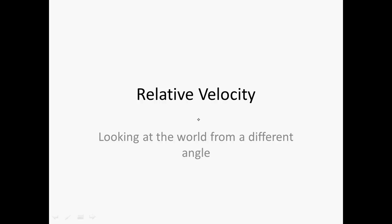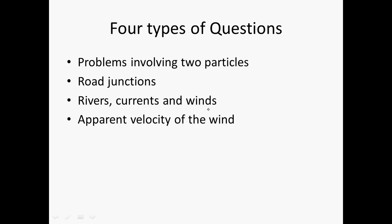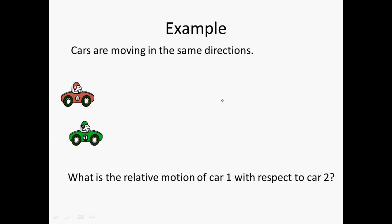Okay, I'm just going to go through a question on relative velocity with this PowerPoint file. So there are four types of questions that are asked in this: problems involving two particles, road junctions, river currents and winds, and apparent velocity of the wind. The problem we're going to be dealing with is problems involving two particles.